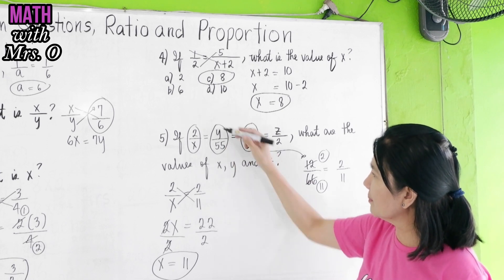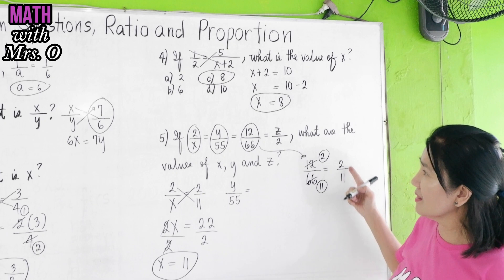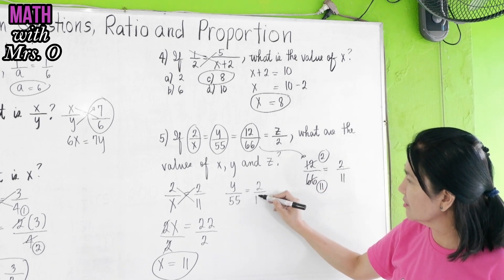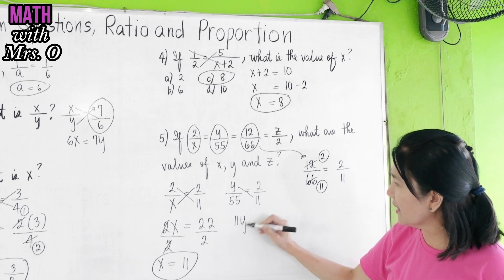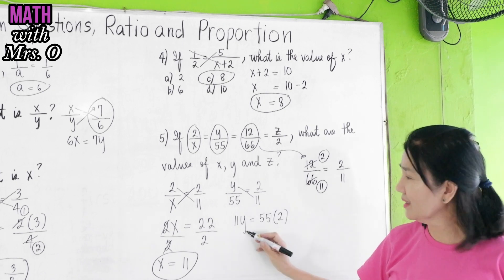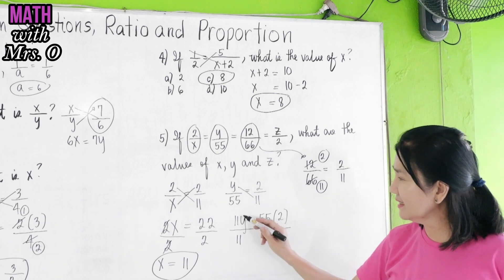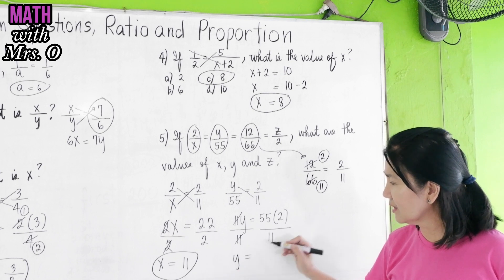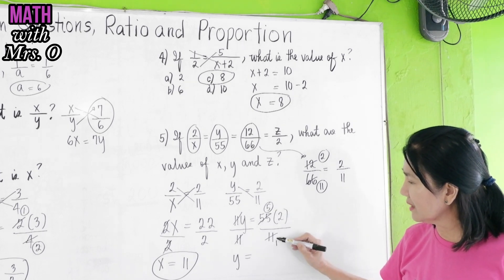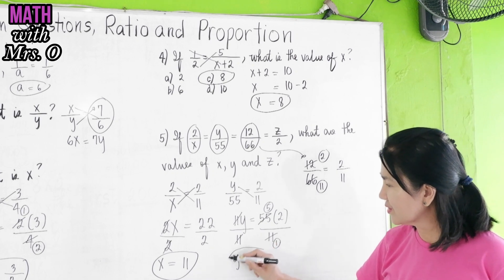Now, to solve for y, copy this, y over 55, and equate it with 2 over 11, which is the simplified value of 12 over 66. Cross multiply. 11 times y is 11y, equals 55 times 2. To isolate y again, divide 11 to both sides of the equation. Then, cancel 11. We get y is equal to 55 divided by 11 gives us 5. This is 11 by 11 is 1. Then, 5 times 2 is 10, divided by 1, is equal to 10. So, y is equal to 10.